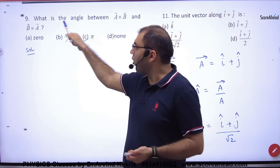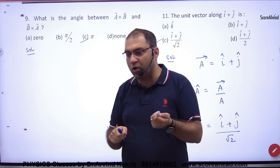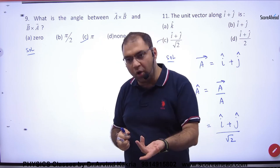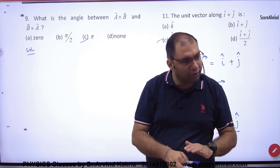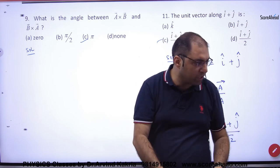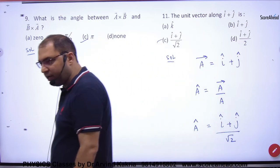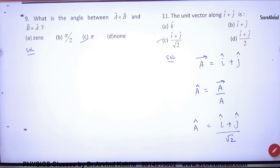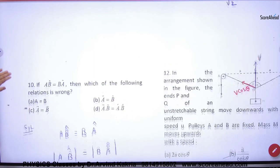So here, if you change the order here, A vector cross B vector, B vector cross A vector, so what will be the angle? 180. The direction will be gone. And what will be the angle? 180. Question number 10 made out.